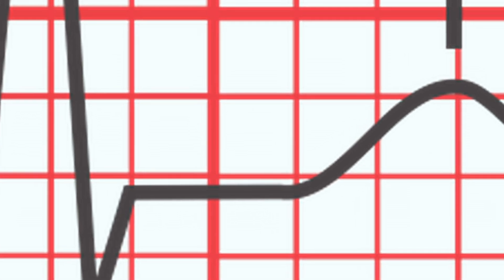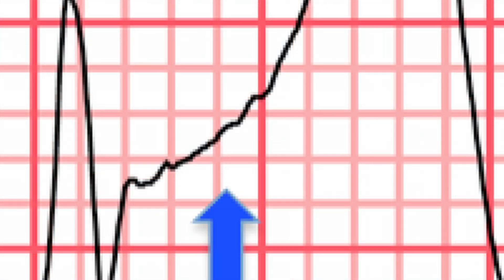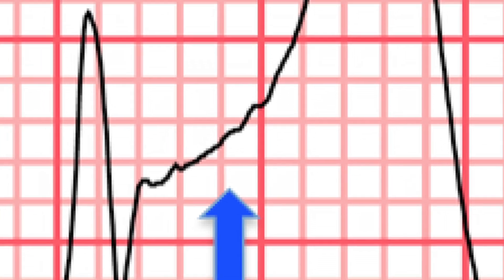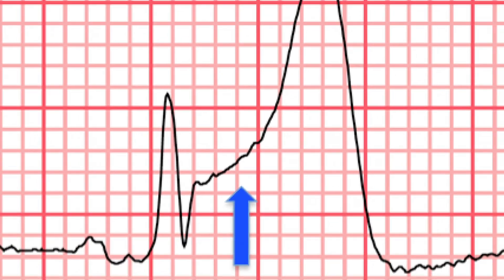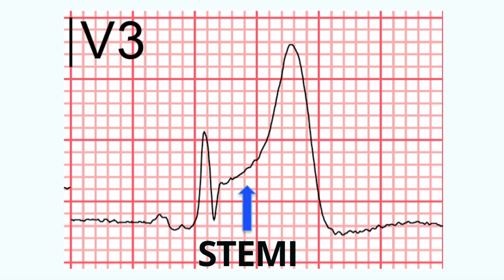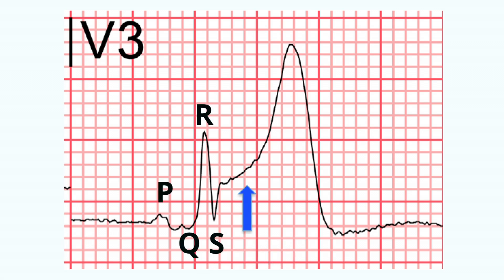So STEMI — S-T segment elevation with myocardial infarction, with a heart attack. Let's show me the STEMI. Now what do you see there? That's a very typical appearance of an acute heart attack, a heart attack that has just happened. It could be within a few minutes even, and it would show S-T elevation. You see the P-wave, you see a QRS, and then the S-T segment is elevated — way high. That's a dangerous sign. And the T-wave is very peaked. So that's a very characteristic appearance with a heart attack.